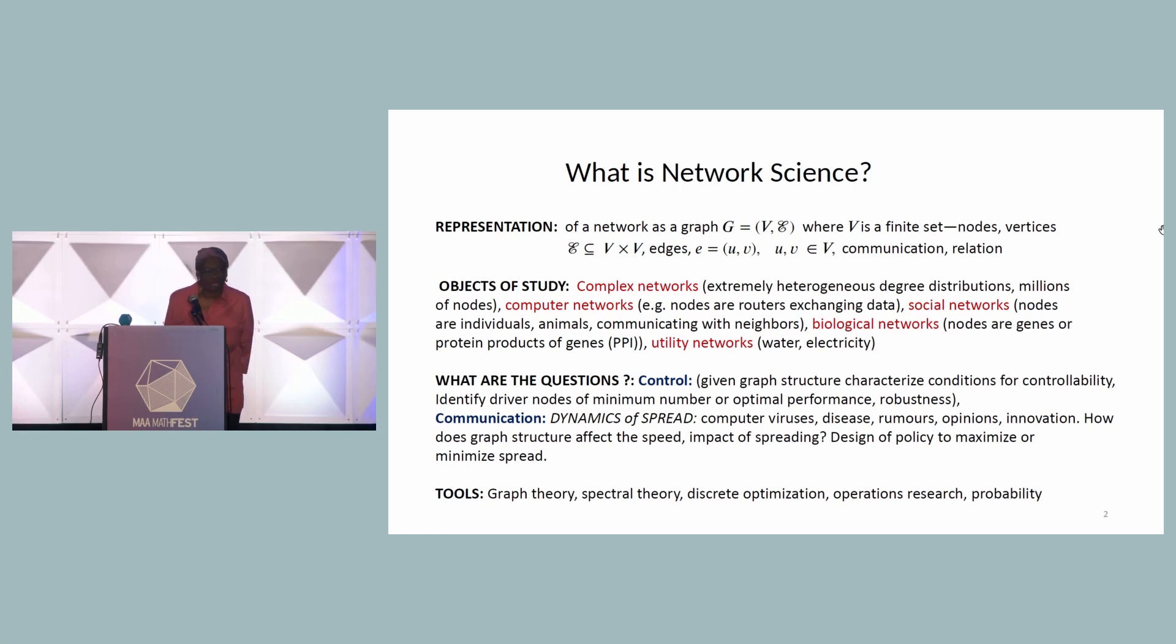I'll start by giving you my definition of network science. Network science is a discipline that attempts to study networks, which of course appear everywhere now in modern life. It uses essentially mathematics as a means to describe, analyze, to control, to prescribe policies for networks. And since network science uses mathematics, the network graph is essentially the object of study. A network graph is a mathematical graph.